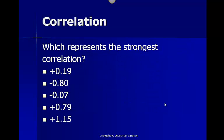Looking at this list here, which one represents the strongest correlation? Right away we can knock out the last one, plus 1.15, because a correlation must be a number between negative 1 and plus 1 and cannot go over 1. Our strongest correlation would be negative 0.8, as it is the closest to either negative 1 or plus 1. The second strongest would be positive 0.79.